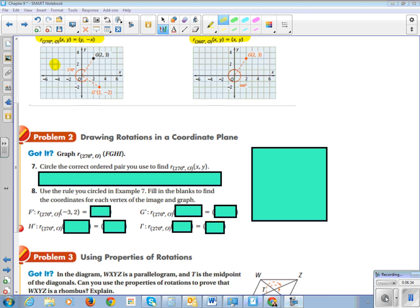Alright, so we are going to rotate FGHI 270 degrees about the origin. The little r, this is terminology, the little r means rotate. So we're going to circle the correct order pair we used to find.